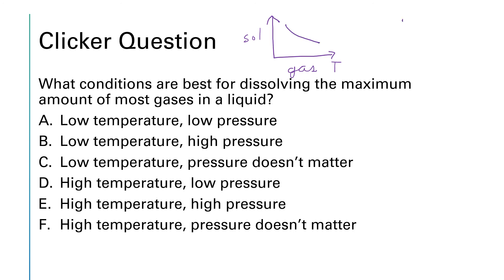And if we're looking at the pressure trend, the pressure trend is given by Henry's law, which is a linear relationship, an increasing linear relationship. So if we want the most gas dissolved in a liquid, we're looking for the lowest temperature and the highest pressure. So that is going to be answer B.